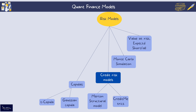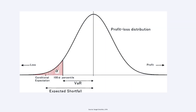Monte Carlo can also be categorized within derivatives pricing or any other asset class pricing. Value at Risk (VaR) estimates the maximum potential loss of a portfolio over a specific time horizon at a given confidence level — for example, at 95% confidence, what is the maximum loss a portfolio can incur in a certain time period. It provides a threshold value such that the probability of a loss exceeding this amount is very small, though it doesn't convey how severe losses are beyond this threshold.